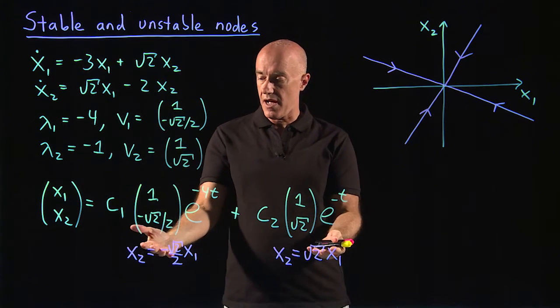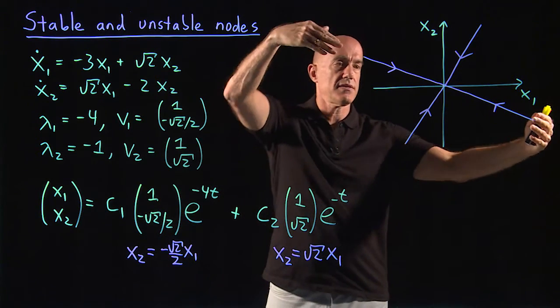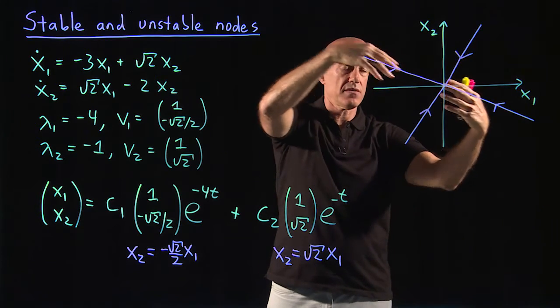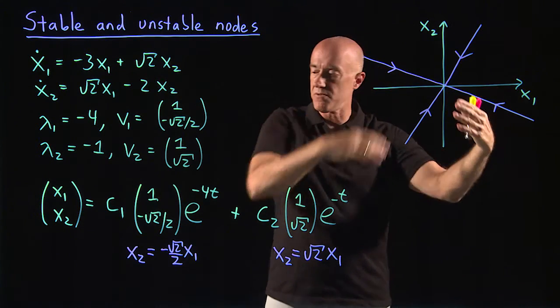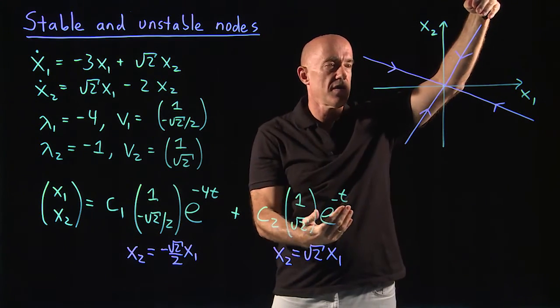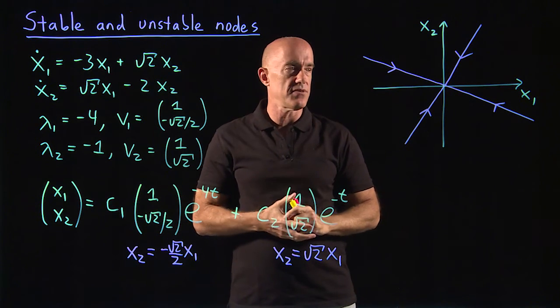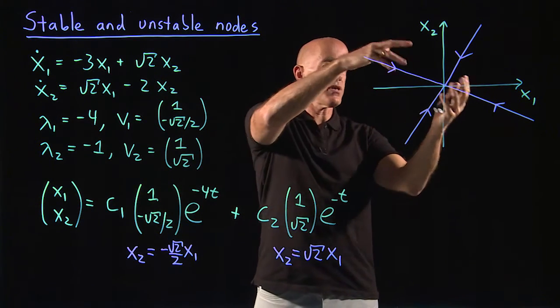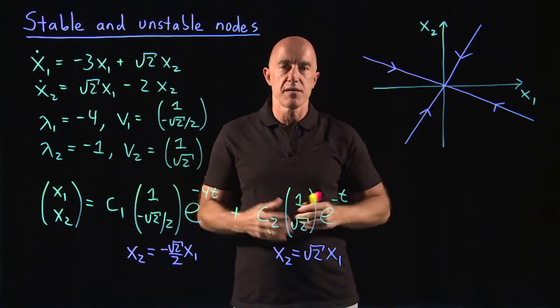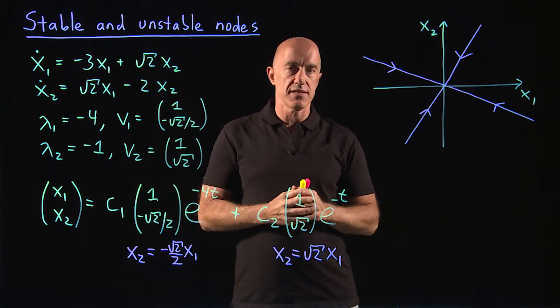So all the solutions then are converging to the fixed point. These eigenvectors are important because the solution along this eigenvector is much faster, converging to the origin much faster because of e to the minus 4t than the solution along this eigenvector, which is only converging to the origin as e to the minus t. That will give this phase portrait a rather funky looking picture that you'll be able to see which solution is decaying faster.